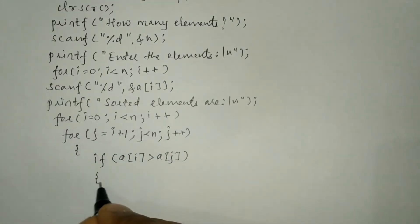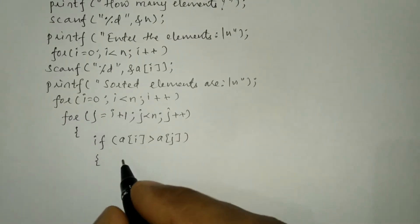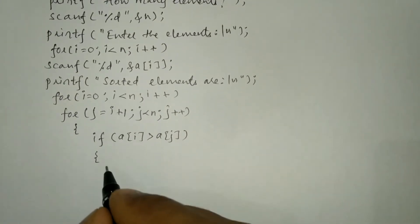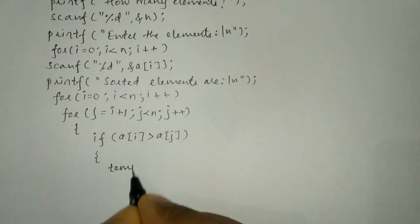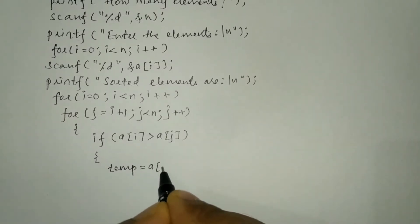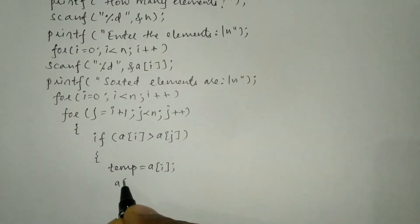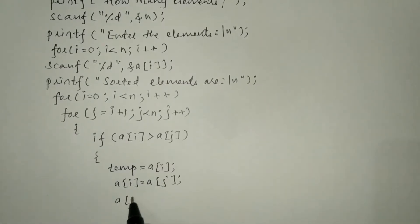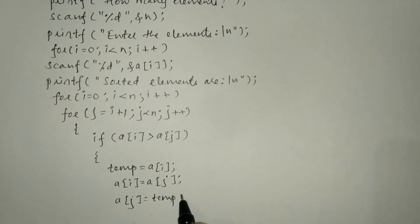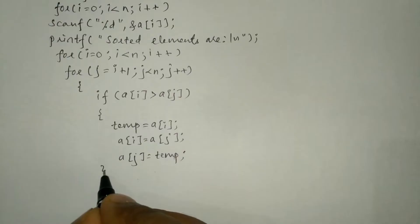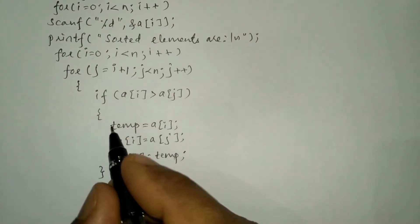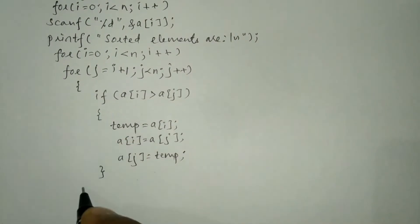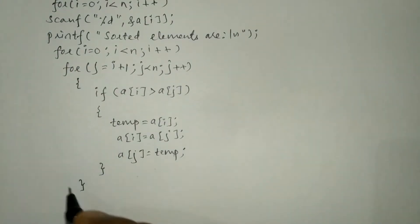If the condition is true, then swapping takes place — that is, interchange of elements. We use the temporary variable: temp equals a[i], then a[i] equals a[j], then a[j] equals temp. Then we close the if statement and the inner for loop with curly closing braces.